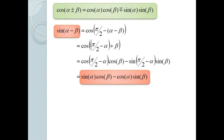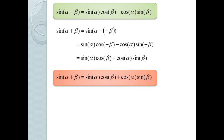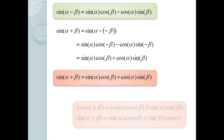Using our complementary identity, sin(α − β) equals cos(π/2 − (α − β)) which equals cos((π/2 − α) + β). Using the cosine sum formula we get cos(π/2 − α) cos β − sin(π/2 − α) sin β. Using the complementary identities again this converts to sin α cos β − sin β cos α. And using the same trick, sin(α + β) is the same formula with minus swapped to plus.